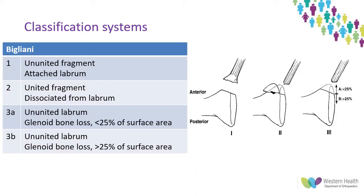Moving on to classification systems, as these help demonstrate the various patterns of injury seen. The Bigliani classification system is one we are likely all familiar with. It is applicable only to bony Bankart lesions, originally developed for anterior glenoid lesions, however there's no clear reason not to apply it to posterior lesions — they are just a less common injury and less common cause of instability.